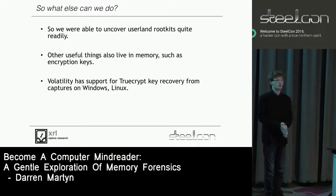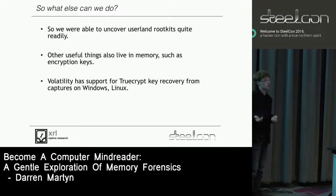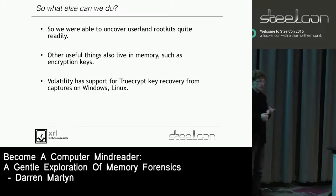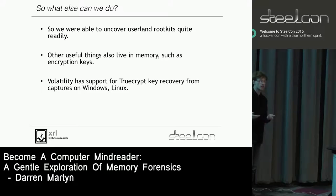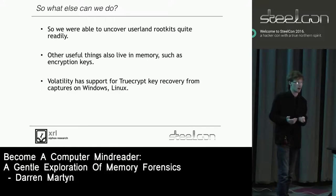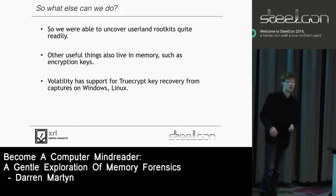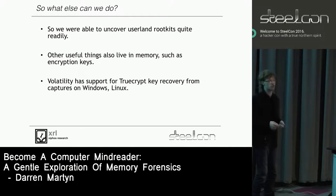That's only one thing you can do with memory forensics. Other fun stuff lives in memory too - if you dump somebody's RAM and they're using full disk encryption, under most circumstances you've got their encryption key living in memory, because that's how computers work. Volatility can just pull out TrueCrypt keys. Encryption keys, passwords, all sorts of fun stuff that isn't on disk in plain text - in memory it's all in plain text. Your box might be encrypted, but if it's got a FireWire port, you're kind of screwed.